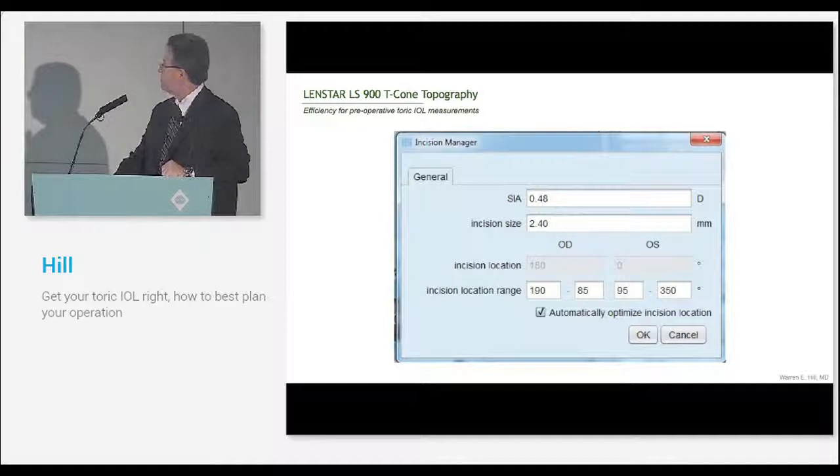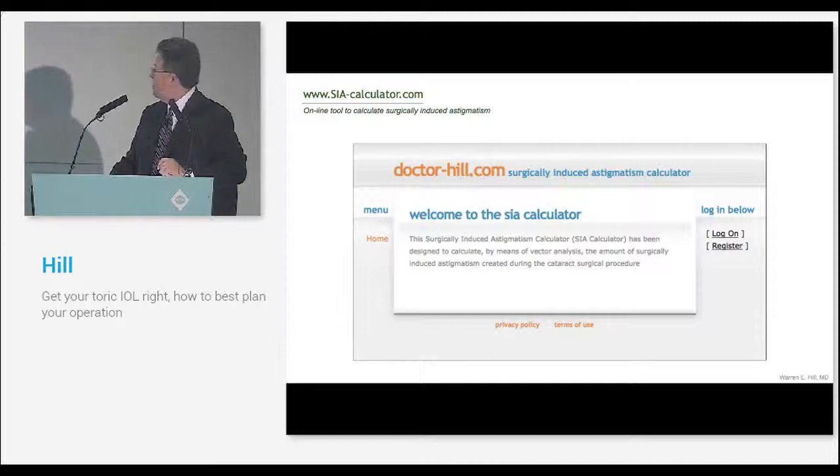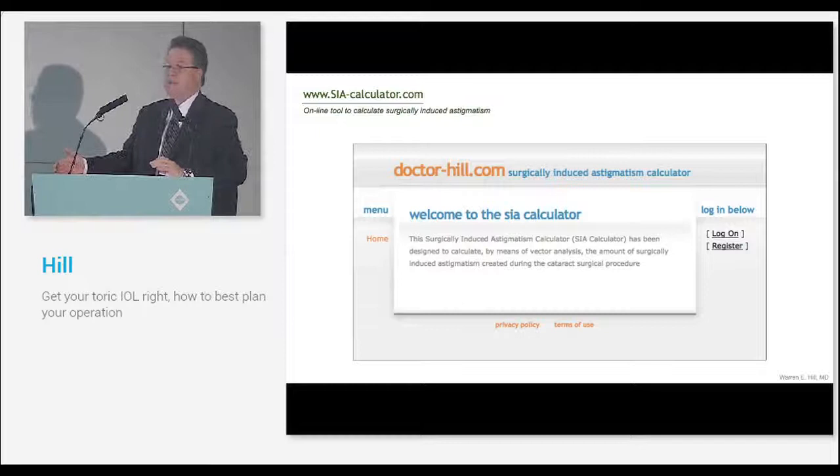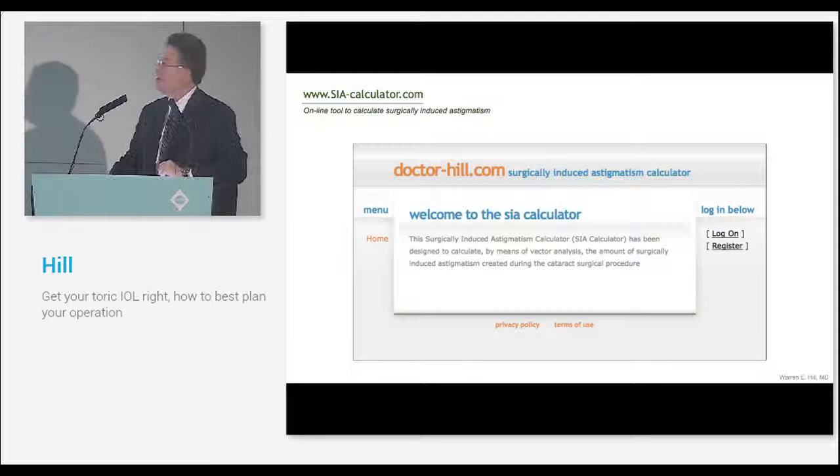There's also a tool that allows you to put in your surgically induced astigmatism. How do we find out your surgically induced astigmatism? You can make up a number, which is what most people do. You can also go to a tool that I've written on the internet. It's sia-calculator.com. It's a free tool. You go there and do a login and a password, and now you own your own database. You can put in 60 cases or 60,000 cases, as many as you want, and it will sort by incision size, location, type, age, all kinds of things. You can figure out what your surgically induced astigmatism is for superior incisions, superior temporal, temporal 2.4 millimeters, 2.8 millimeters. And this is free.